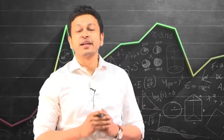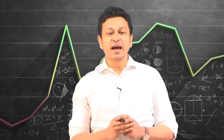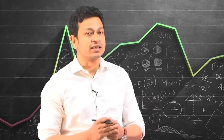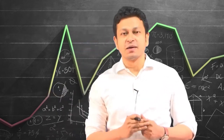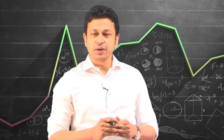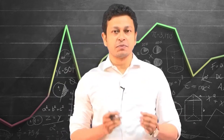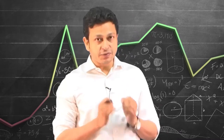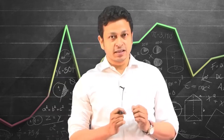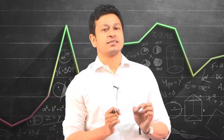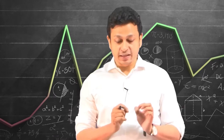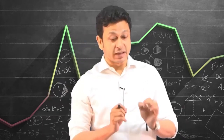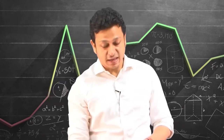Hello and welcome back to the lecture on Applied Econometrics. We have been talking about probability distribution, and we also learned about the structure of variable. In this lecture, we are going to talk about how the probability distribution is going to be different between a continuous variable and a discrete random variable. Whenever we are talking about variable here, it means a random variable.